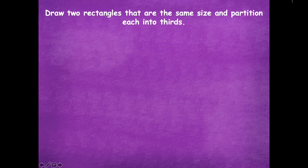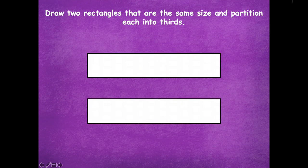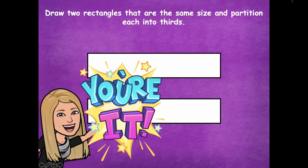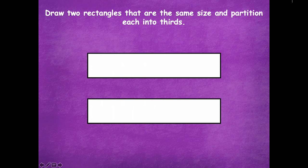So draw two rectangles that are the same size and partition each into thirds. I want you to draw them on top of each other just like this. Then you're going to partition them into thirds. So pause, do that, and then click play when you're ready for the next step. Okay, so take those two rectangles and split them into thirds. All right friends, pause if you need more time. All right, so this one's now in thirds, and this one is now in thirds.